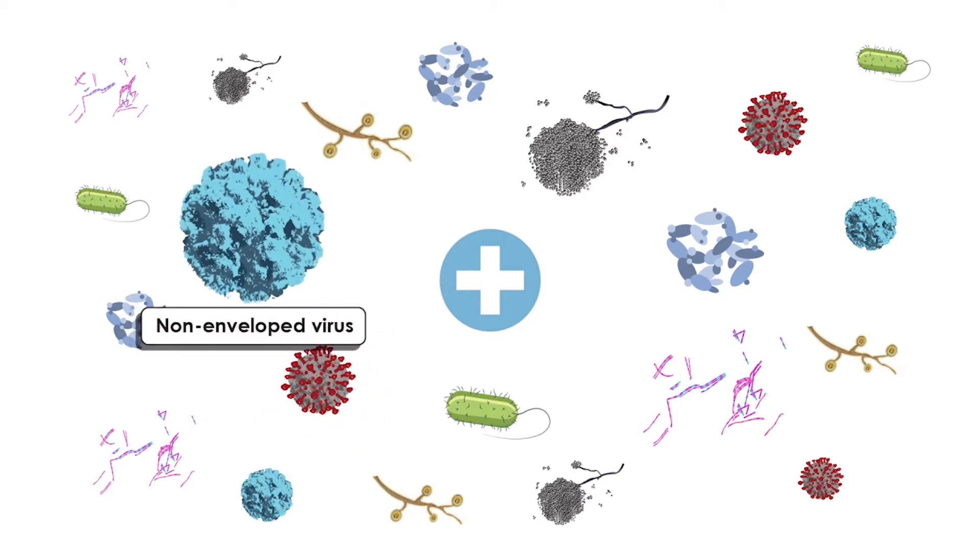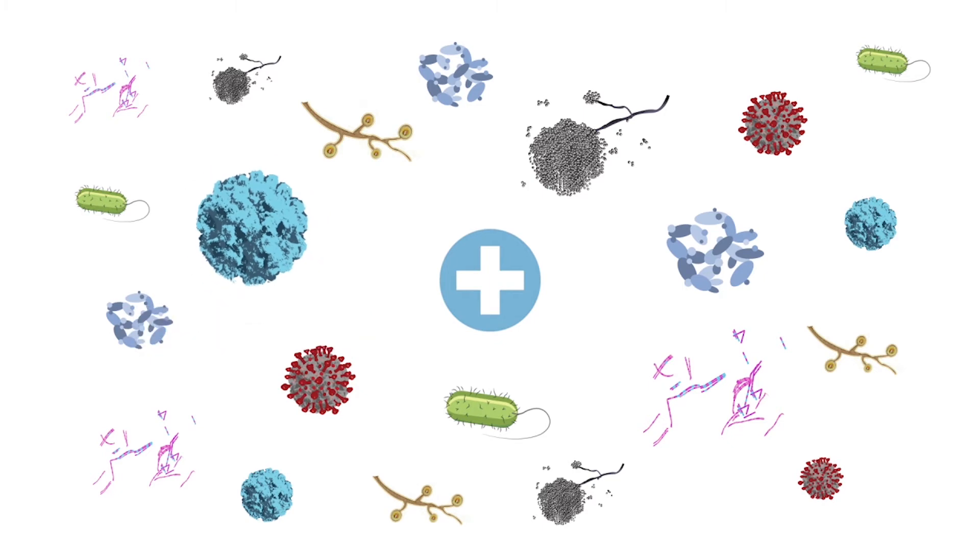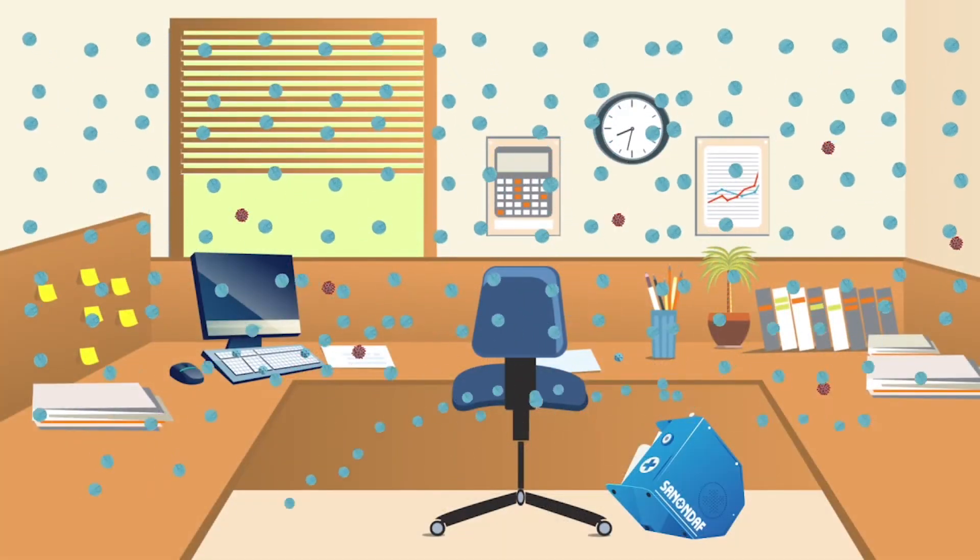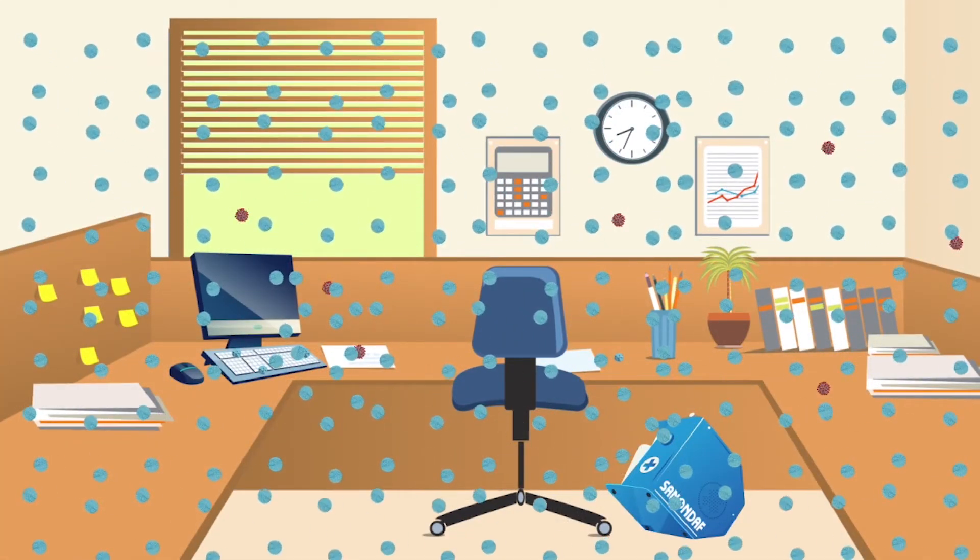It also targets non-enveloped viruses such as norovirus, and gram-positive and gram-negative bacteria such as MRSA. Administered as a dry vapor in particle size matching its microscopic target, our Sanondaf touchless disinfection treatment attacks each pathogen in two ways.